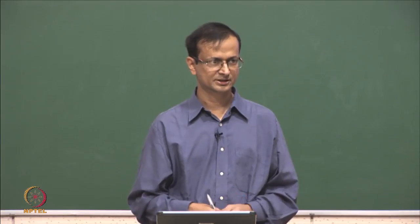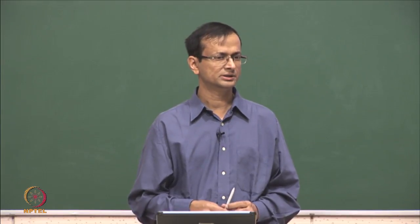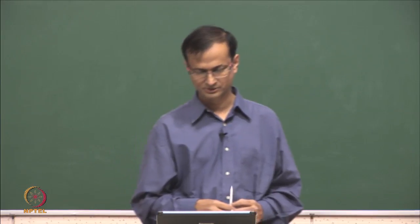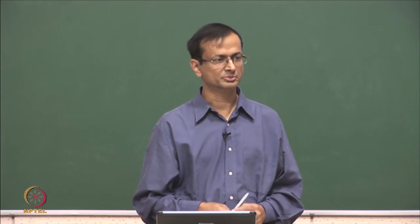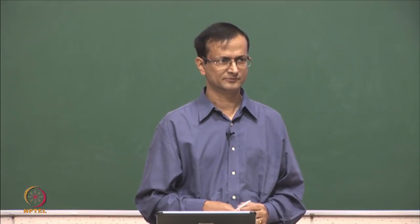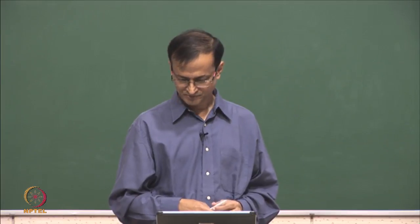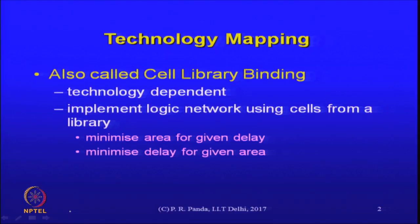Technology mapping is the second phase of multilevel logic synthesis. What we did so far is the first phase, in which we assumed some simple library and did not go into the properties of the cells in the library. Those arguments were in terms of literals, which are a little higher level of abstraction. But once you have done those optimizations, there is the need to realize a logical netlist in terms of physical cells chosen from a standard cell library or any library. That is what technology mapping consists of.